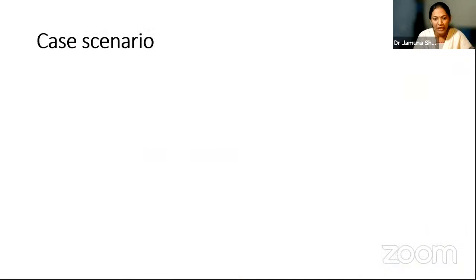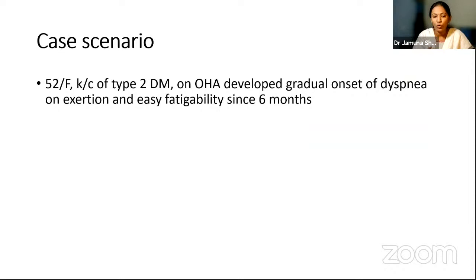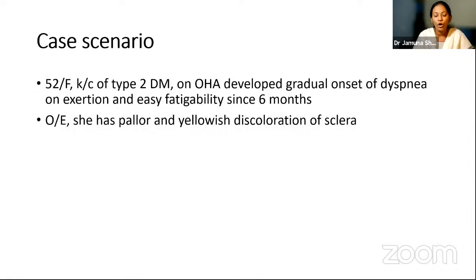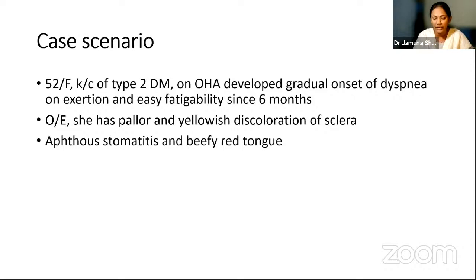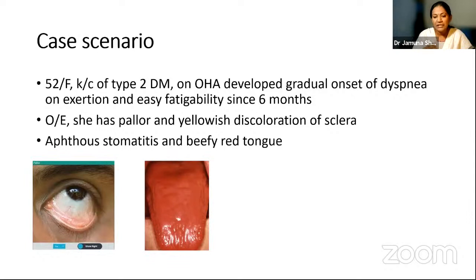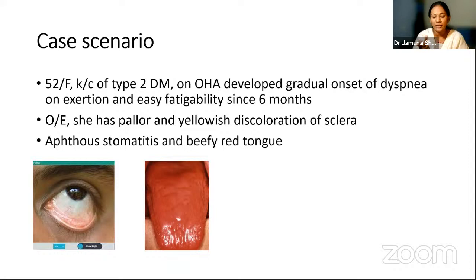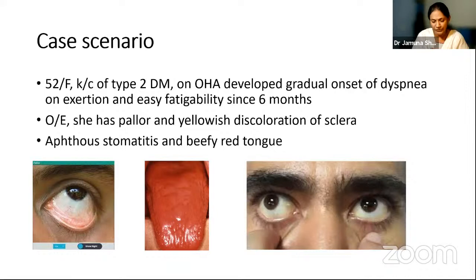Consider a case scenario: a 52-year-old female, known case of type 2 diabetes on oral hypoglycemic drugs, who developed gradual onset of dyspnea on exertion and easy fatigability for six months. On examination, she has pallor and yellow discoloration of the sclera indicating mild jaundice. She also has aphthous stomatitis and a beefy red tongue. B12 and folate deficiency will not only affect the bone marrow but also all rapidly dividing cells. In the tongue, it causes loss of papillae, leading to the glossy appearing beefy red tongue.